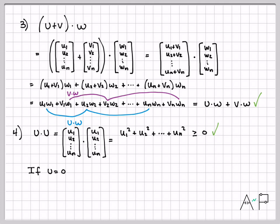If u is equal to zero, what do I end up with? I end up with zero squared plus zero squared plus zero squared, and I get zero. So if the vector u is the all zero vector, the dot product of u dot u is zero. So that establishes one direction. What if u dot u is zero? What if the dot product is zero?